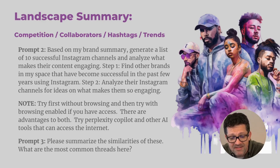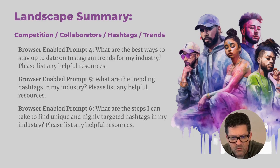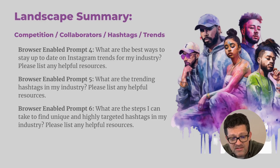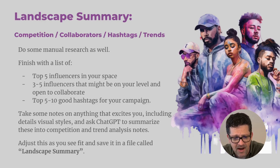Prompt three: 'Please summarize the similarities of these. What are the most common threads?' Continuing this landscape summary research with browser-enabled ChatGPT. Prompt four: 'What are the best ways to stay up to date on Instagram trends for my industry? Please list any helpful resources.' Prompt five, browser-enabled: 'What are the trending hashtags in my industry? Please list any helpful resources.' Prompt six: 'What are the steps I can take to find unique and highly targeted hashtags in my industry? Please list any helpful resources.' Prompt five gives you a general idea of hashtags you may already know; prompt six helps you find resources to get into the highly targeted, unique hashtags in your space. This is the one step where you'll need to do some manual research as well.